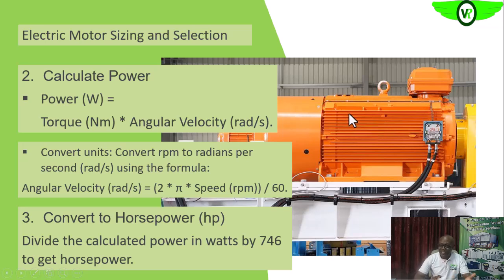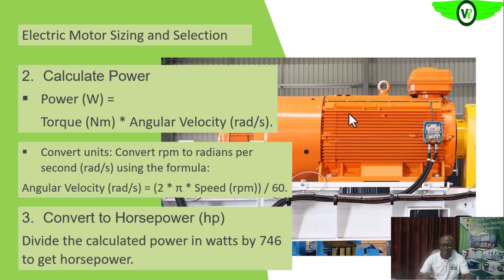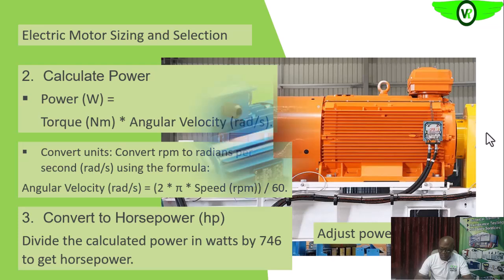To summarize the steps: first determine the load in newtons, then determine the torque — which is the load times the lever arm distance, as we saw with the conveyor belt. Then power equals torque times angular velocity. Convert that wattage to horsepower by dividing by 746. Remember to also adjust for efficiency — the amount of efficiency required in the system.